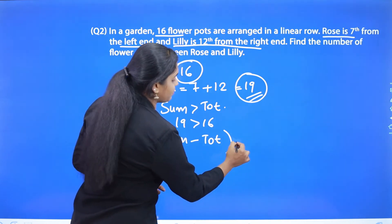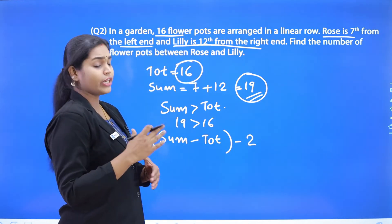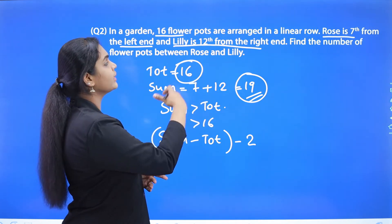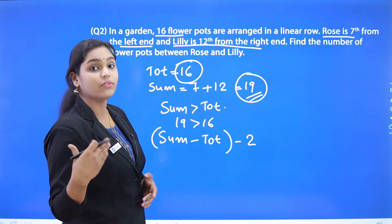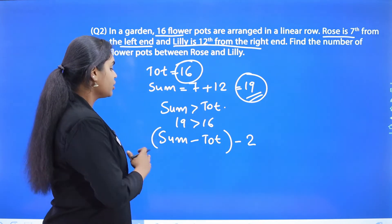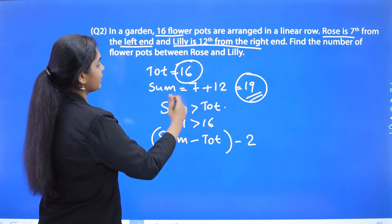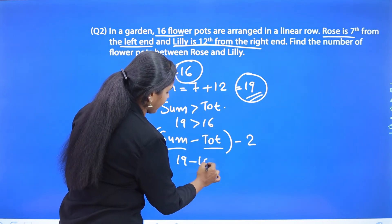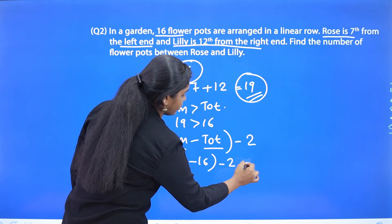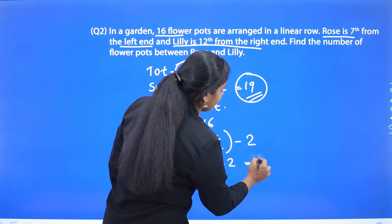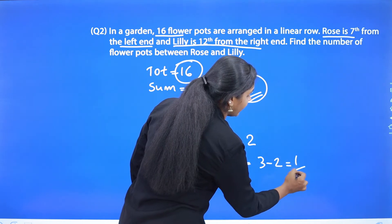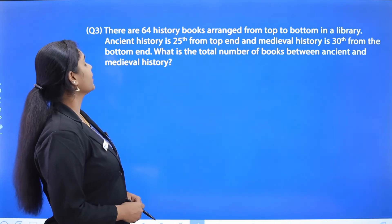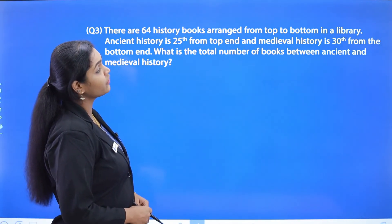Since the sum is greater than the total, we apply the formula: sum minus total, then subtract 2. We subtract 2 to avoid repetition, because Rose and Lily are each counted twice. So: 19 minus 16 is 3, and 3 minus 2 is 1. There is one flower pot between Rose and Lily.